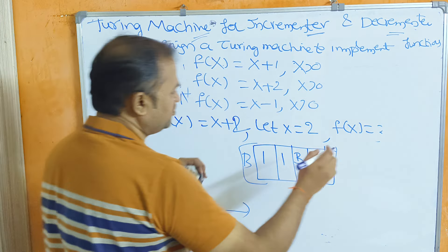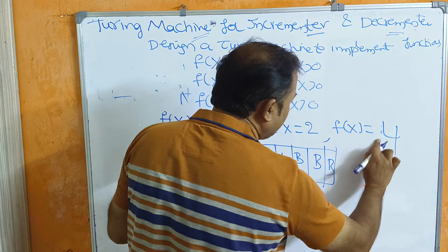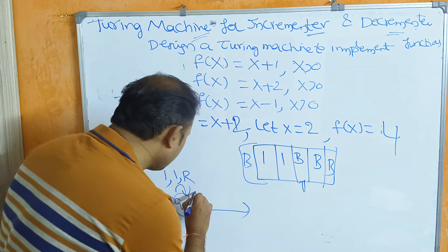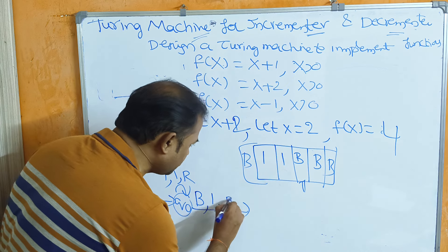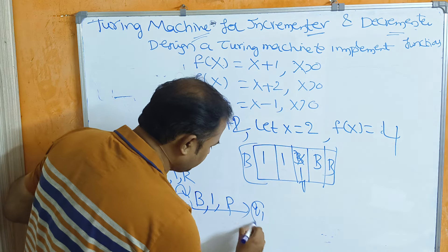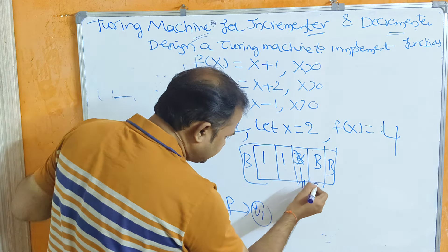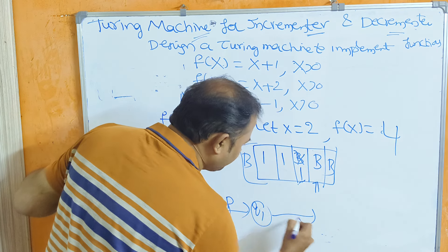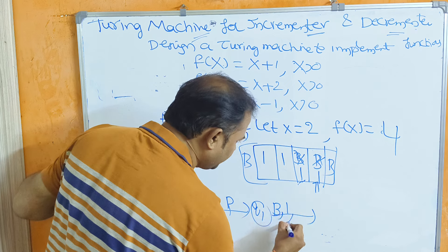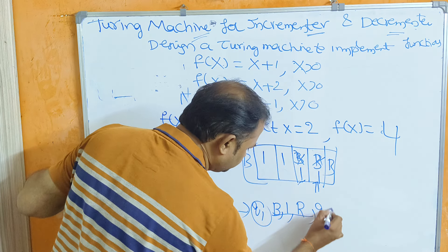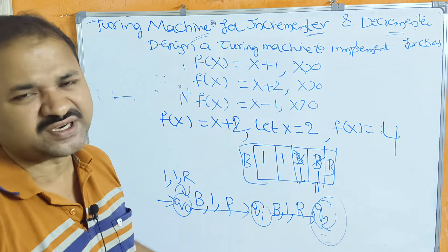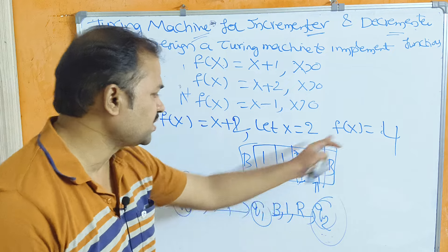Now we will get one blank symbol. Q1 is where we see the blank symbol and we can replace it. If you want to replace the blank symbol, you can replace it. Let our next state be Q2. Q2 is our final state. The initial input is 2 and the output is 4.